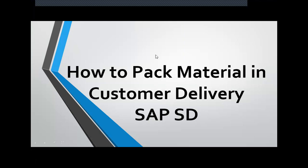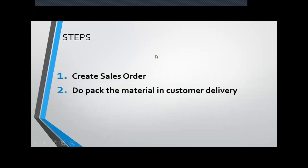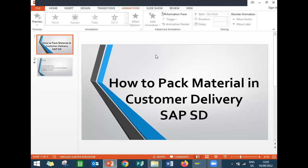The process I am going to do is: first I am going to create the sales order, next I am going to pack the material in the customer delivery, and then I am going to bill the customer. Sales order I am going to create in VA01, delivery in VL01N, and billing in VF01 — all these transaction codes.